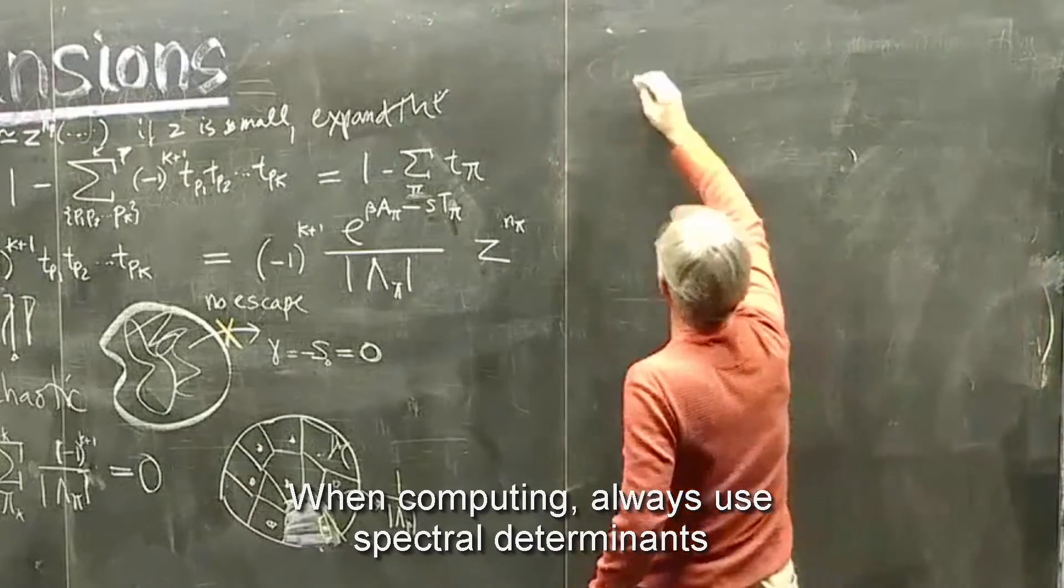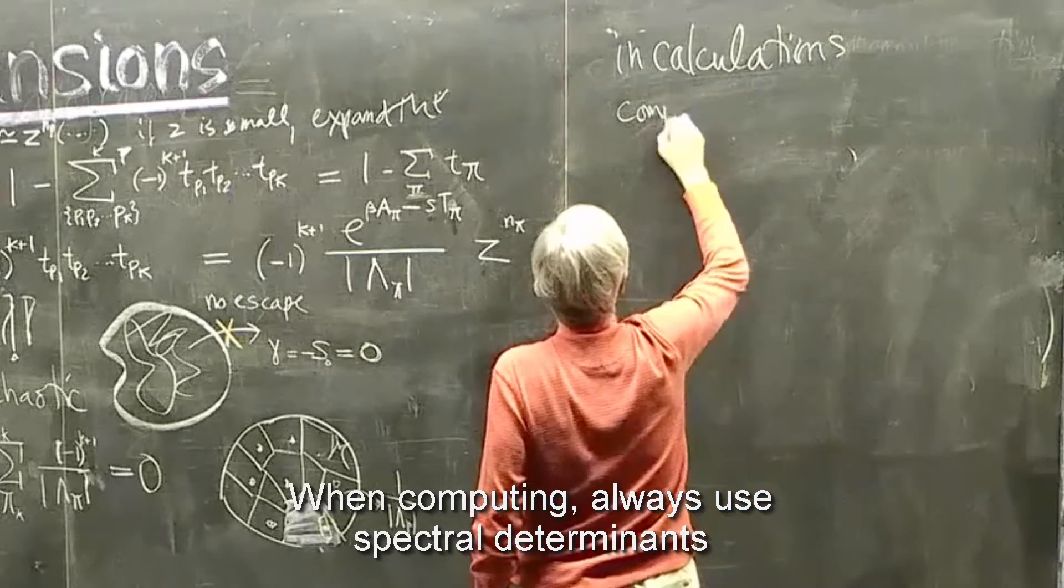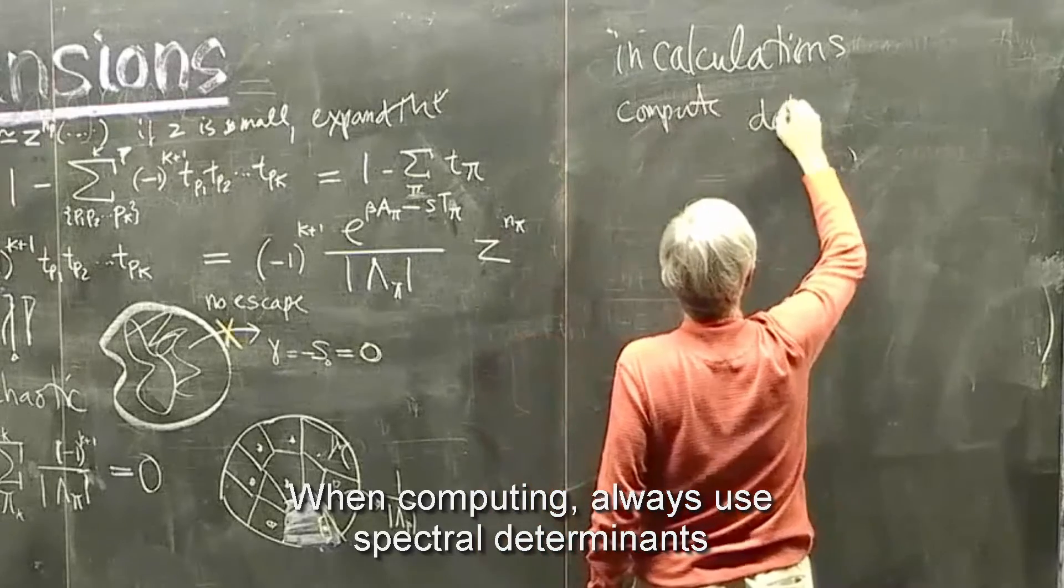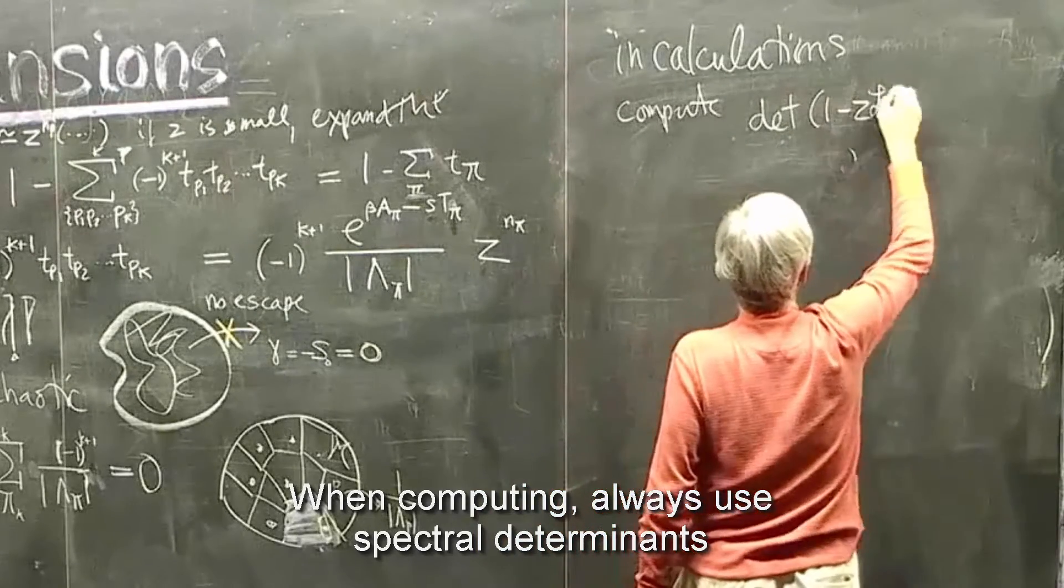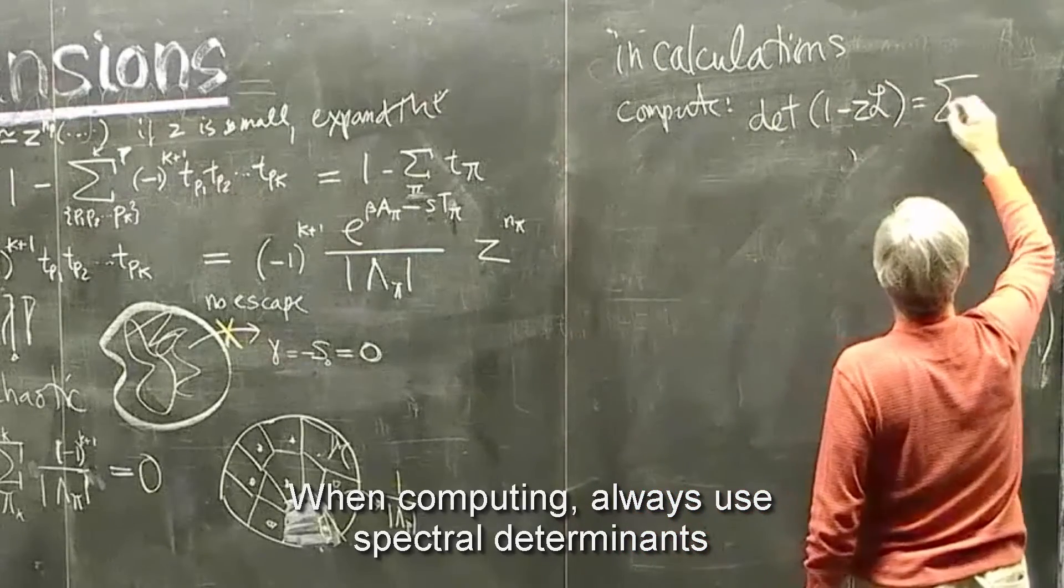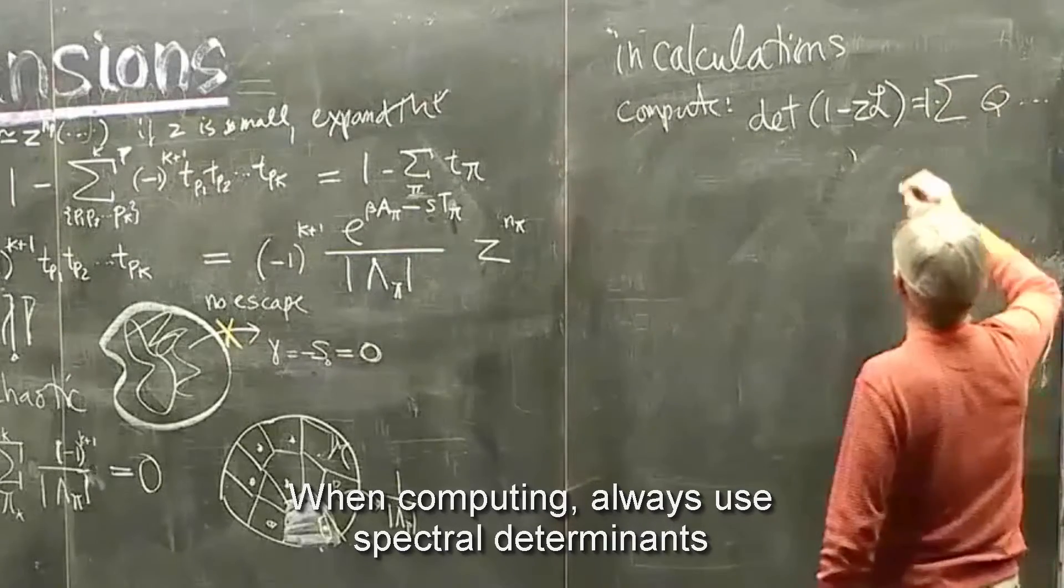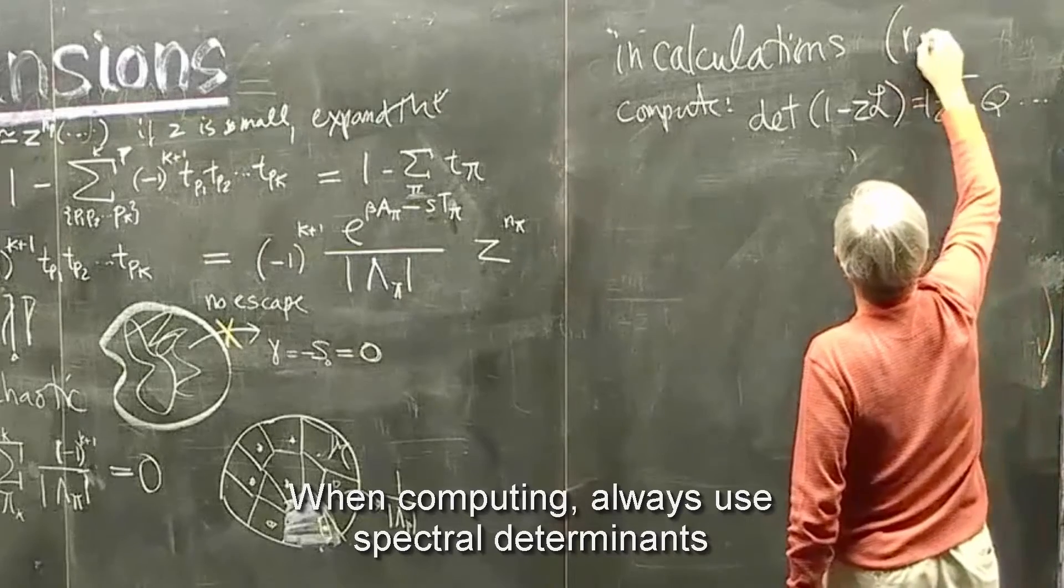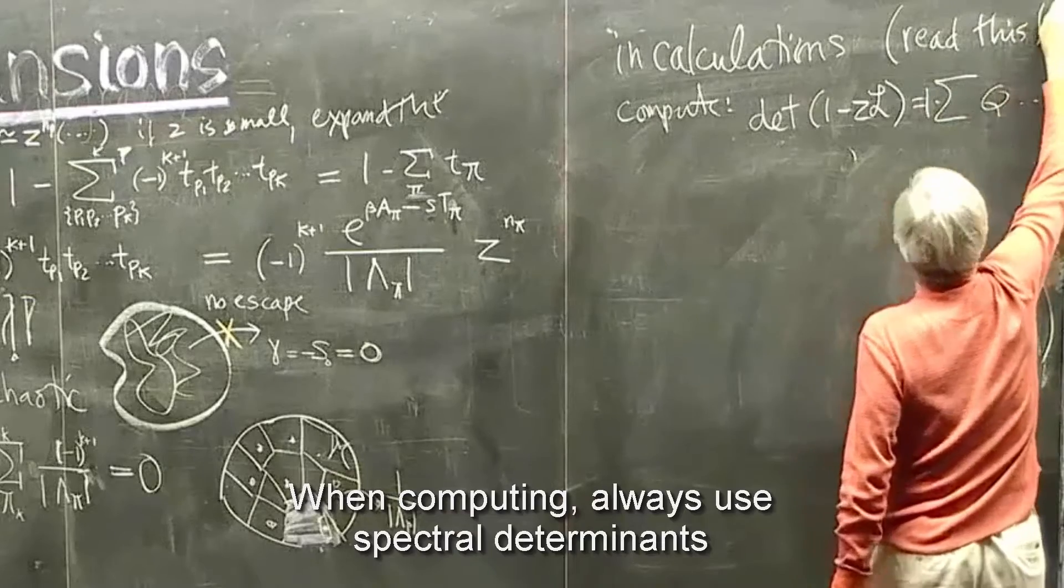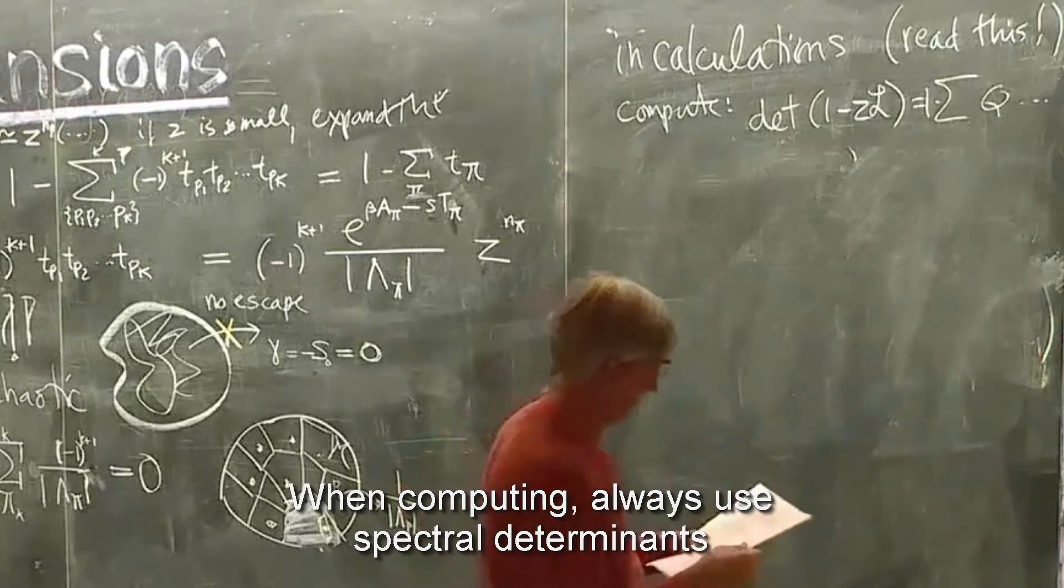In calculations, compute the Fredholm determinant, or spectral determinant, and one minus c of L, which is some sum, one minus of some contributions. And the chaos book says how to read this. But conceptually it's not very important, so I will not cover it in the lecture. If you just read the material, you'll be fine.